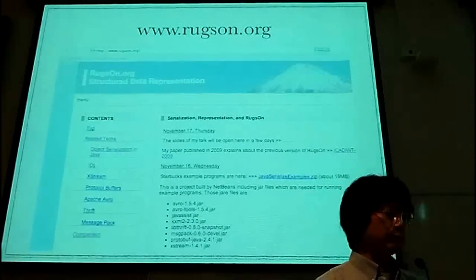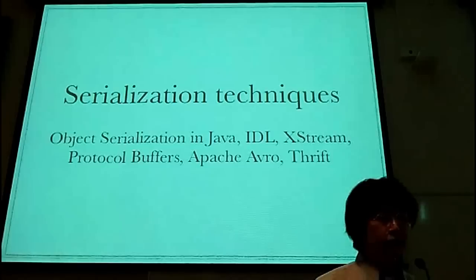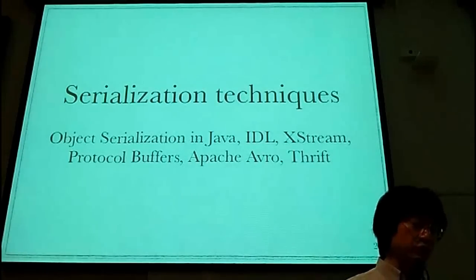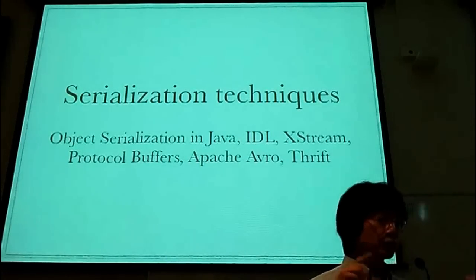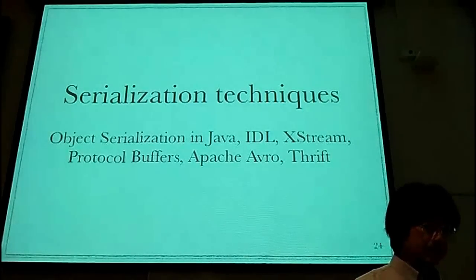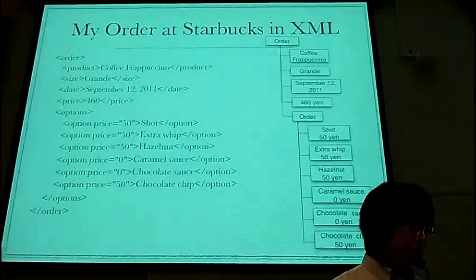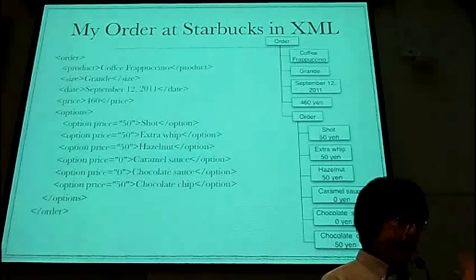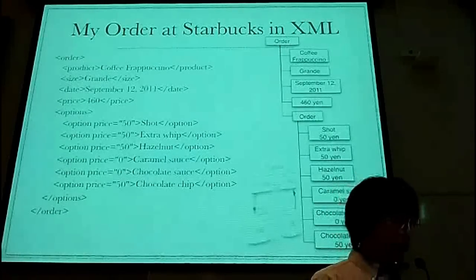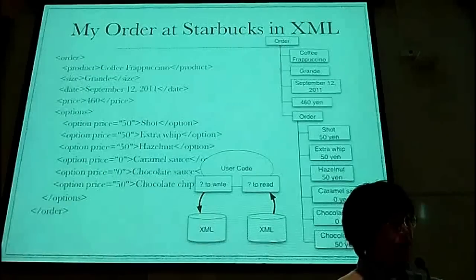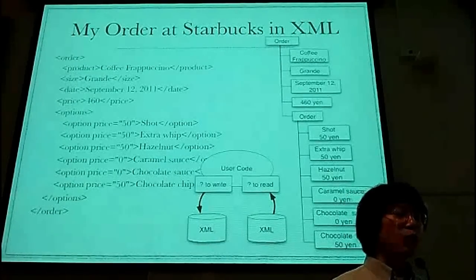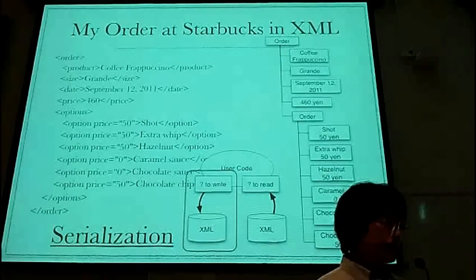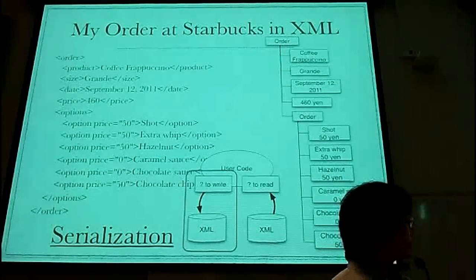It's Ragzone. Before talking about Ragzone, I will talk about six serialization techniques: object serialization in Java, IDL, XStream, Protocol Buffers, Apache Avro, and Thrift. This XML data shows the structure and contents of data. If you write it to a file, you need a program to do so. This is serialization.